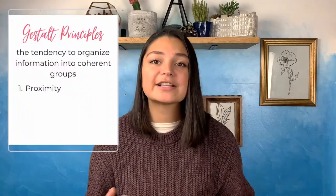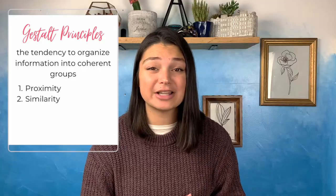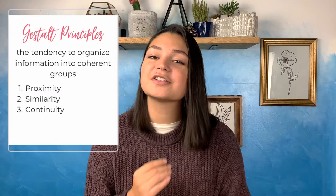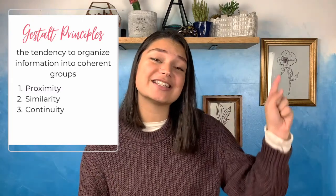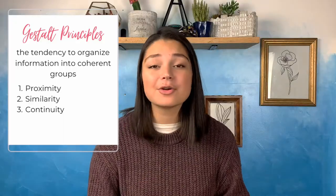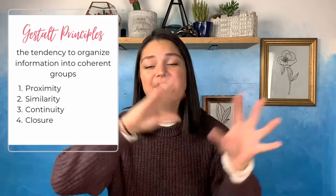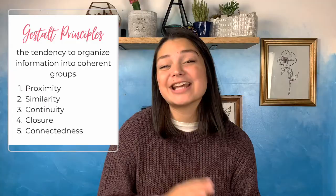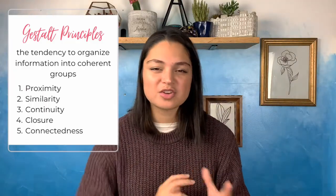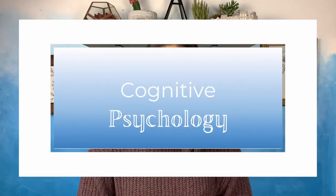Sensation and perception: Psych 101 covers Gestalt principles — the tendency to organize stimuli into coherent groups. There are five: proximity (we group things that are close together), similarity (we group things by type), continuity (we tend to see objects as continuous rather than discrete), closure (we fill in the gaps to perceive a whole), and connectedness (we perceive stimuli as single units rather than components).